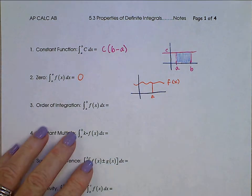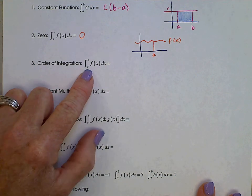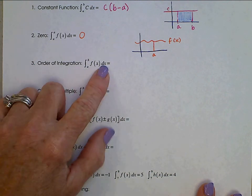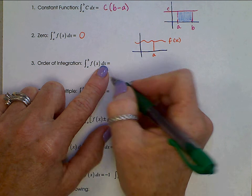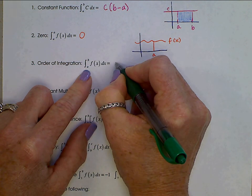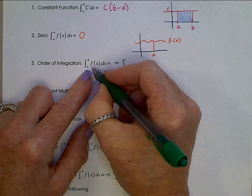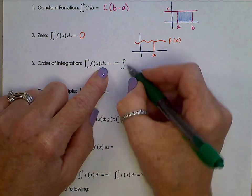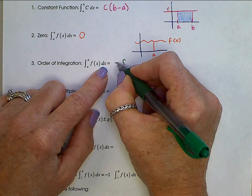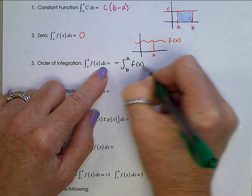Looking at this next one, the order of integration says that if we have an integral from A to B of f(x) dx, we can reverse the order of those limits of integration, and then the sign of the integral changes. So the integral from A to B of f(x) dx is the same as the opposite of the integral from B to A of f(x) dx.